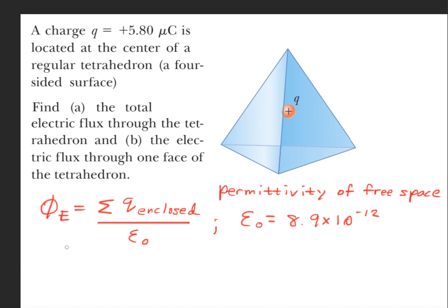Now, epsilon naught is known as the permittivity of free space, and the value for that is 8.9 times 10 to the minus 12 power.